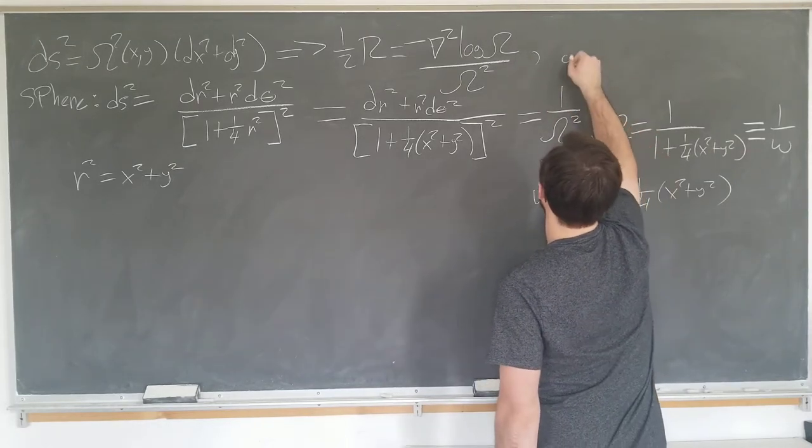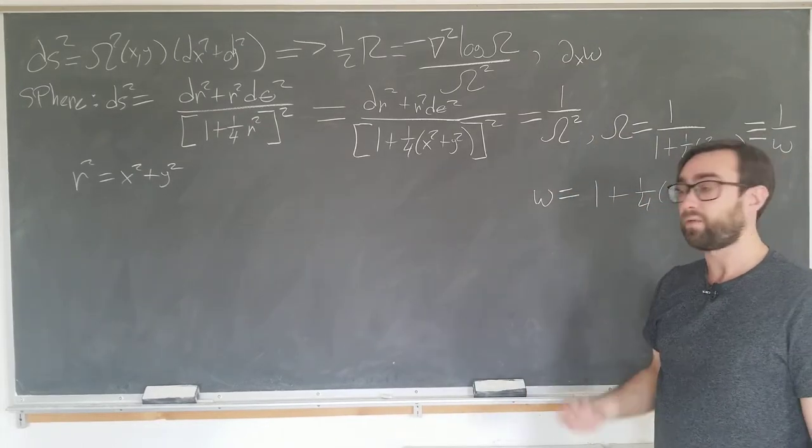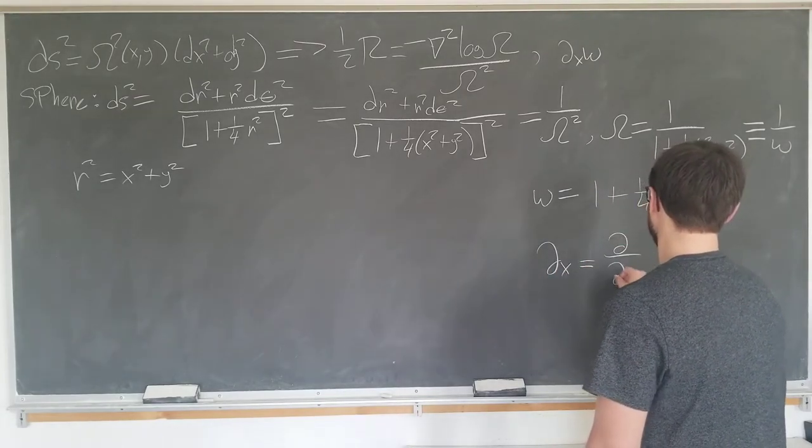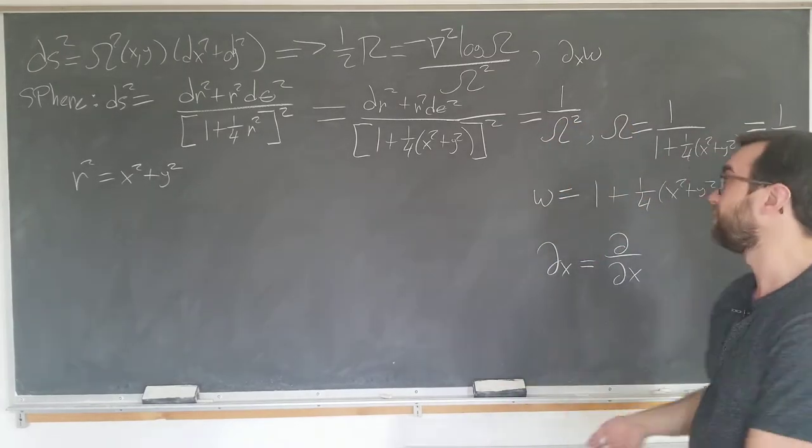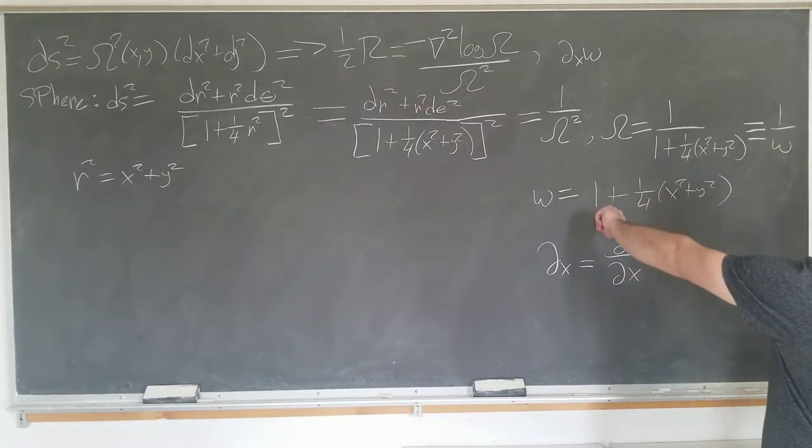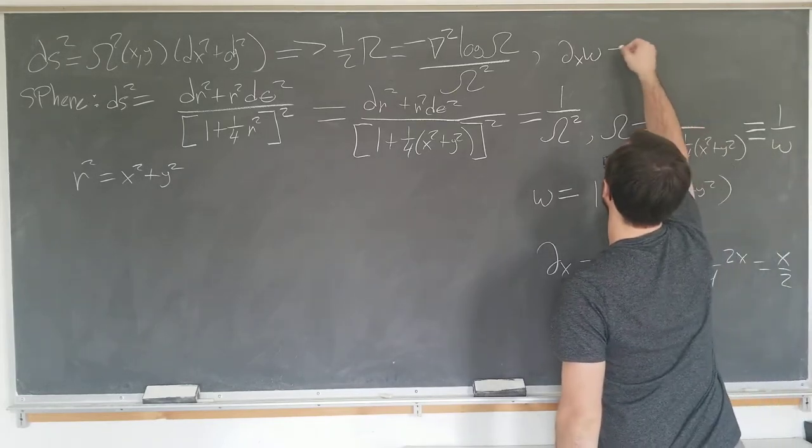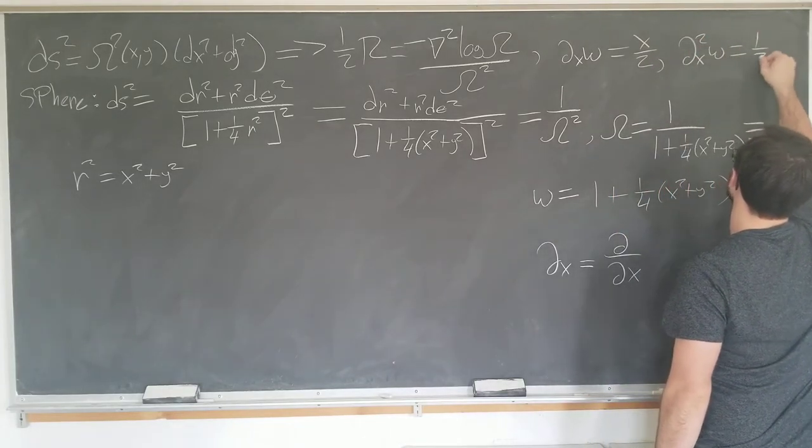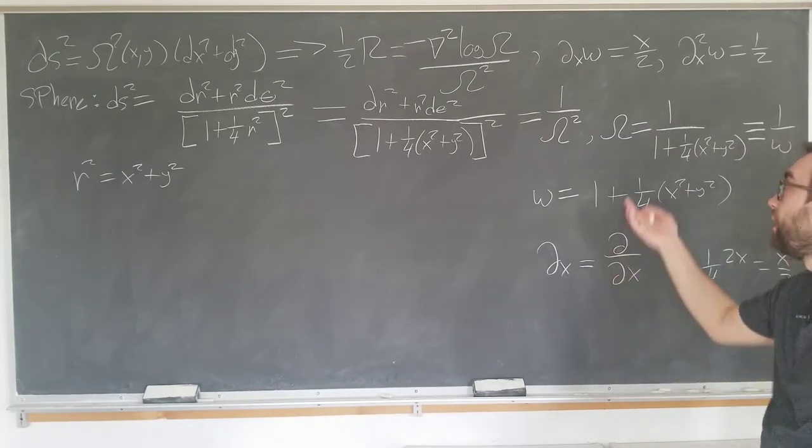We have that dx of omega. FYI, I'm going to be using the GR notation for partial derivatives. So dx is equal to d by dx. This is very standard in GR. I'm not just making this up. People do use this. The x derivative is obviously going to be one quarter times 2x, which is just x over 2. And then the second derivative is one half. We can see that the y derivatives are the same with x being replaced by y.